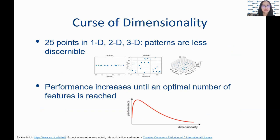Performance of data analysis increases initially when more features are included, as that allows more information to be used. At a certain point, the performance significantly drops due to the curse of dimensionality. To address this, we use feature selection to reduce the number of selected attributes.